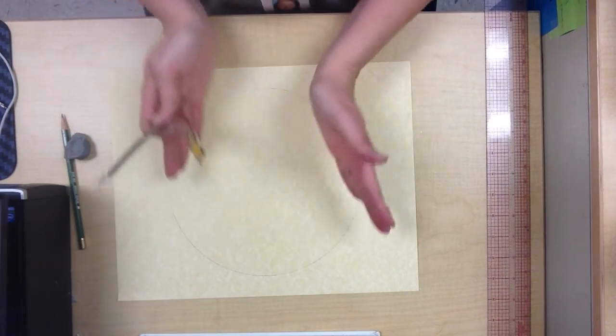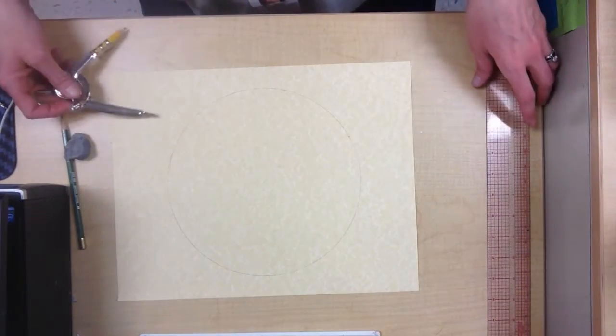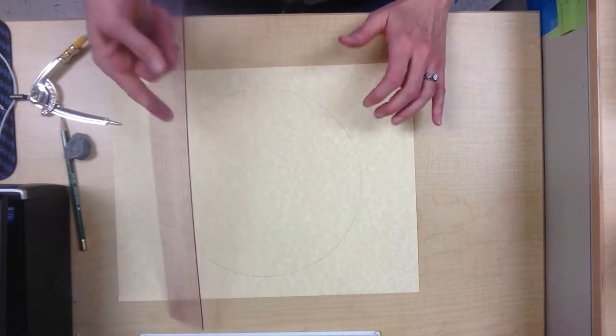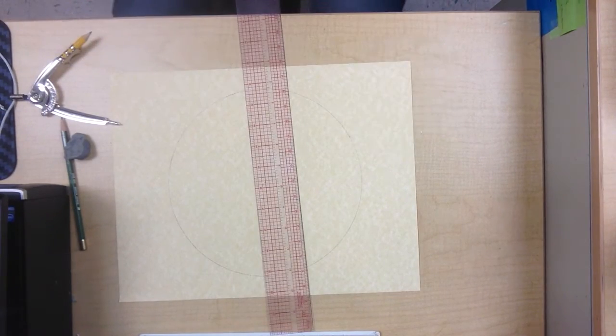Now what I want to do is divide it into 12, and you can do all of that with a compass and a ruler. So the first thing I do, and I do this the easy way,